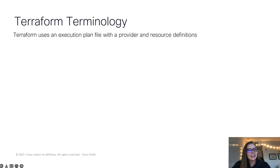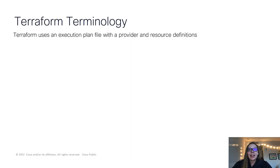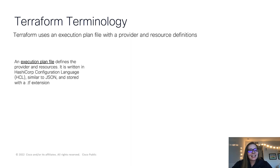So now let's cover some Terraform terminology. Terraform uses an execution plan file, and this is to describe the provider resources and essentially the desired state that we're looking for. We have our execution plan file built in HCL.